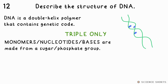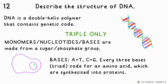DNA is a double helix polymer. For triple, you also need to know the bases or nucleotides: A and T always go together and C and G do too. These are all made from a sugar phosphate group. Every three bases code for an amino acid, and the sequence of these determines what proteins are synthesized.